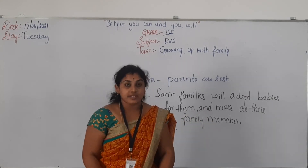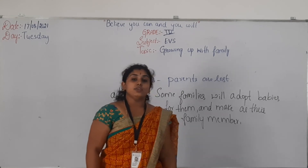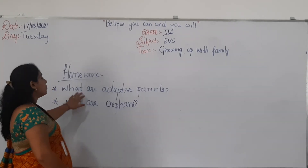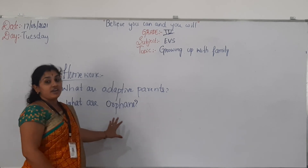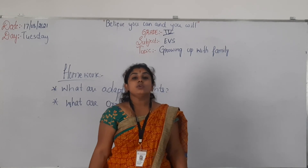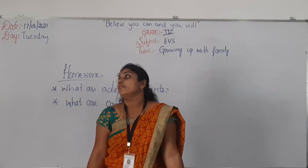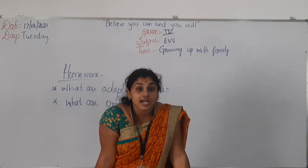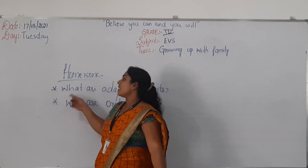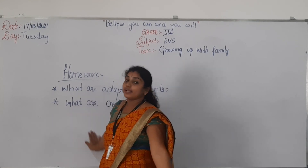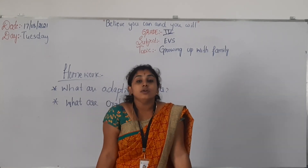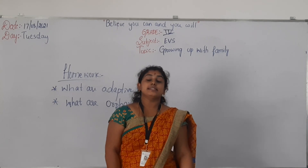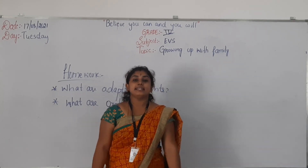I hope today's lesson is enough for you. Before going to end the class, we will have homework. Please note down your homework. Today's homework is: what are adoptive parents, and what are orphans. Write your answers in your homework notebook - the four-lines book. On the right corner write your date and day. On the left corner write your name. In the center mention your grade, subject, and topic. Then write the question followed by the answer, neatly, and send it in the group. We will discuss a new topic in the next class. Until then, take care.